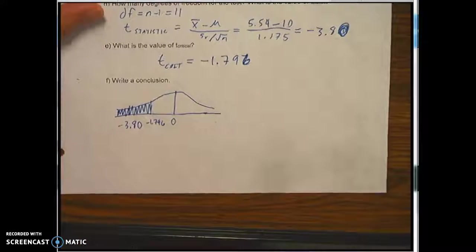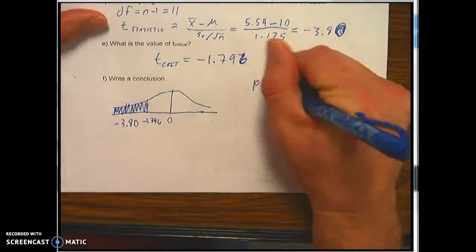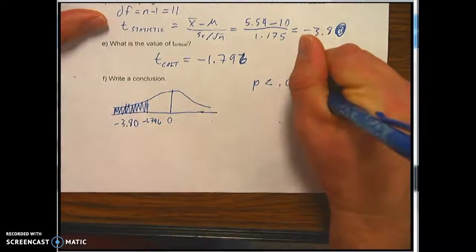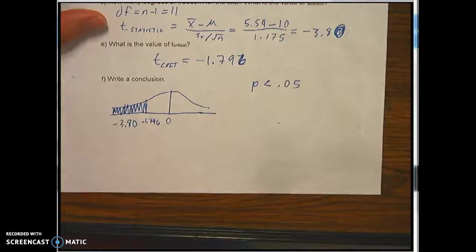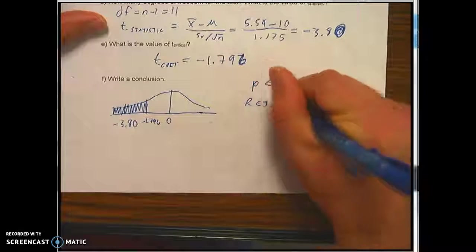So as a result, we know that the p value is less than 0.05. And for that reason, we would reject the null hypothesis.